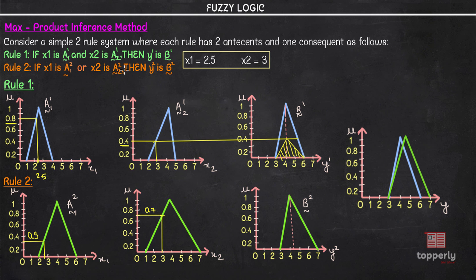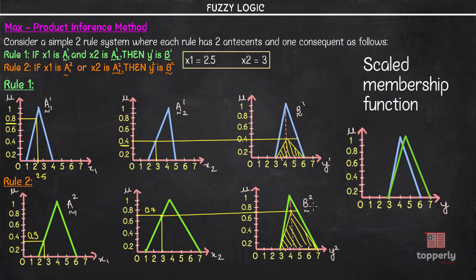Similarly for Rule 2, we have membership values 0.3 and 0.7. Since we use the OR connective, we take the maximum, which is 0.7. We extend 0.7 and create a scaled membership function for the output. This gives us a scaled membership function — the result from the max-product inference method.